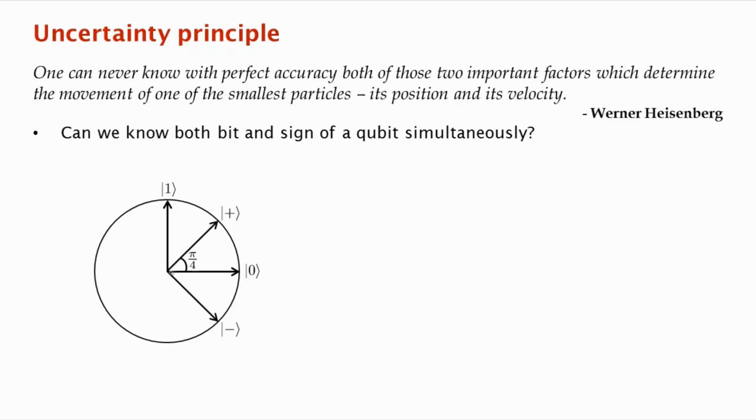So what would a state look like where we know the bit value well? Well, to know the bit value, to know it perfectly, what must the state look like? Well, it must look either like 0 or 1. Of course, we can have an arbitrary phase in front, but let's ignore that for the moment. Let's imagine we are on the real plane, and then we don't want to worry about this unknown phase.